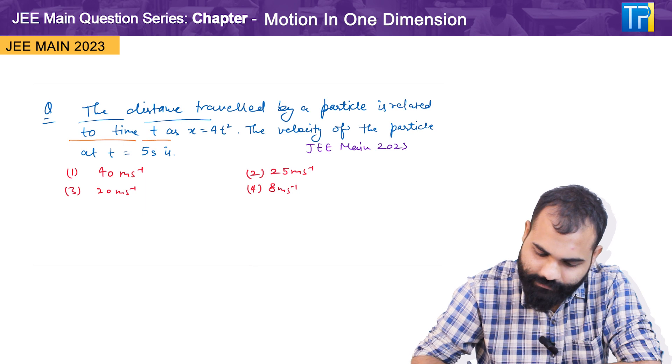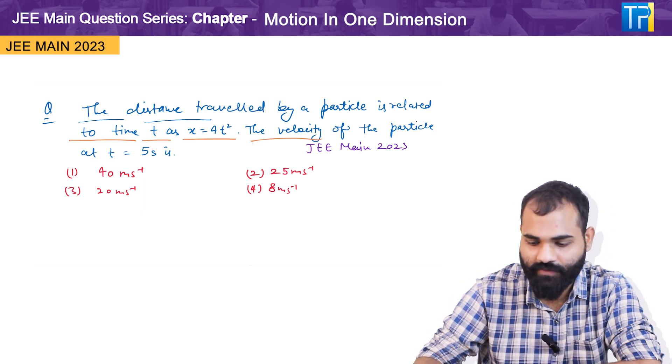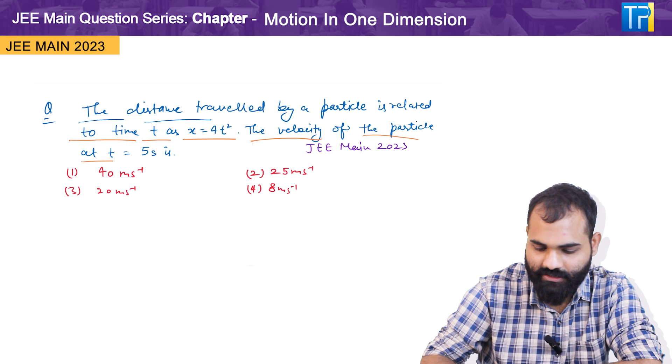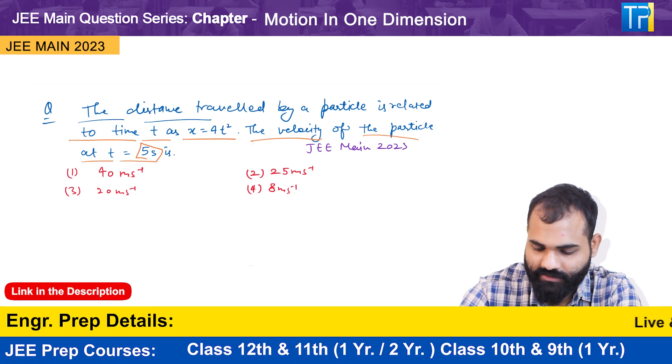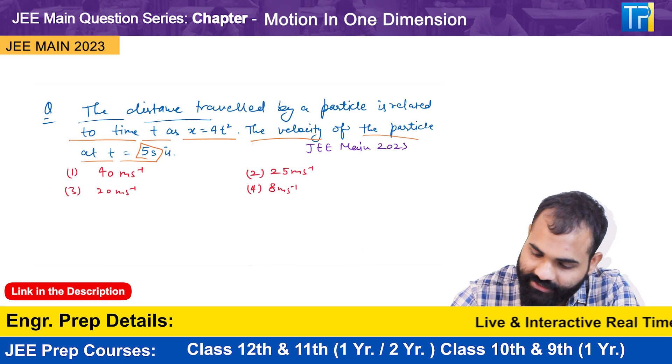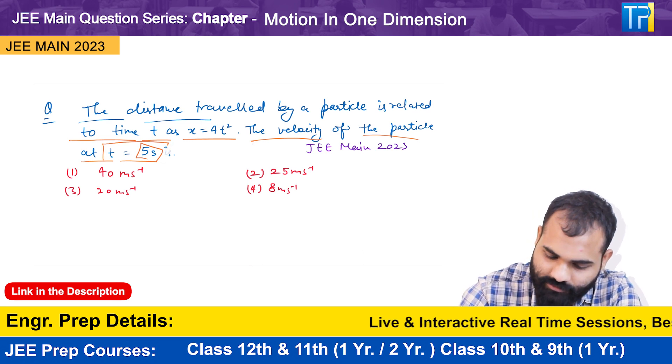related to time t, which is x equals 4t square. The velocity of the particle at time t at t equals 5 seconds. So basically we have to find the velocity of particle at time equals 5 seconds.